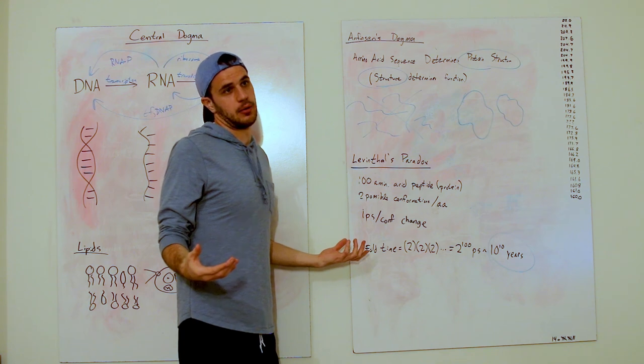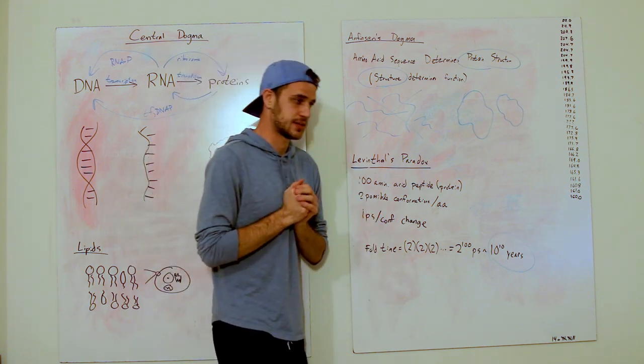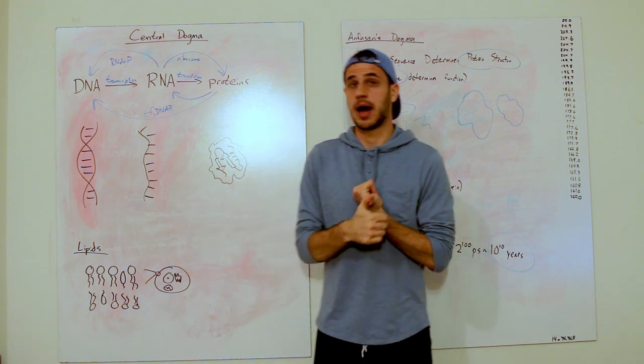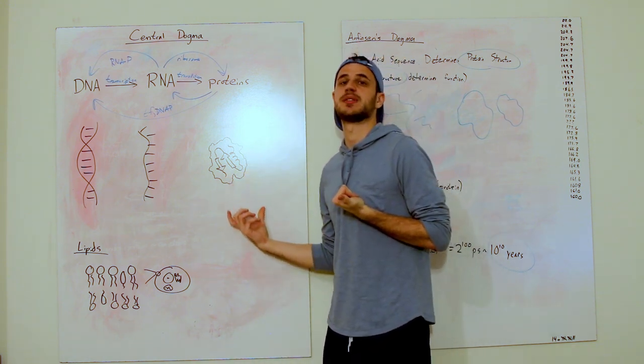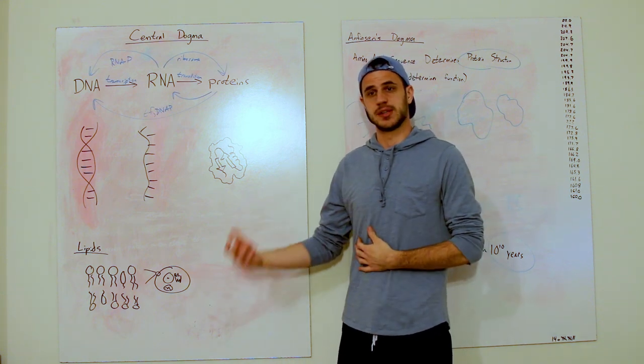And what about everything else in the cell? And that's what we're going to talk about next. We're going to talk about the amino acid structure and the structure of proteins themselves, which will give us a way to describe the function of the cell.